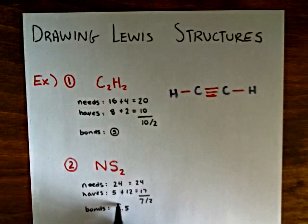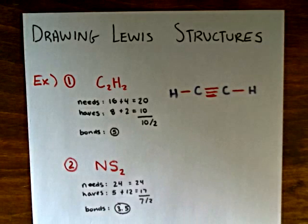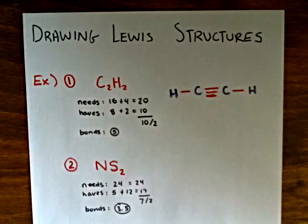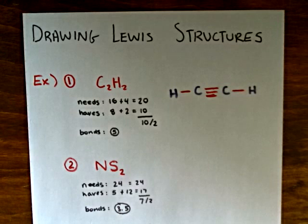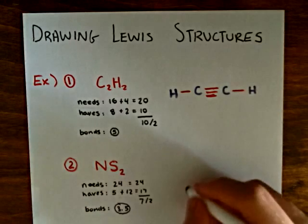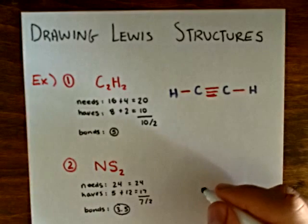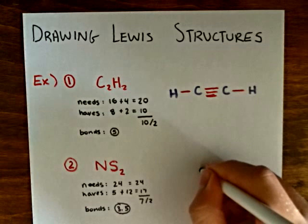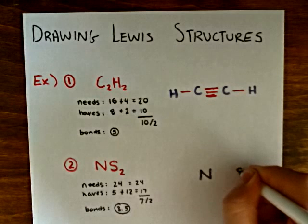7 is of course an odd number, and that gives us an odd number of bonds, which may seem strange, but it's really not. If you ever get an odd number of bonds, it just means that the species is paramagnetic. The nitrogen will be in the center and the sulfurs will be out to the sides.